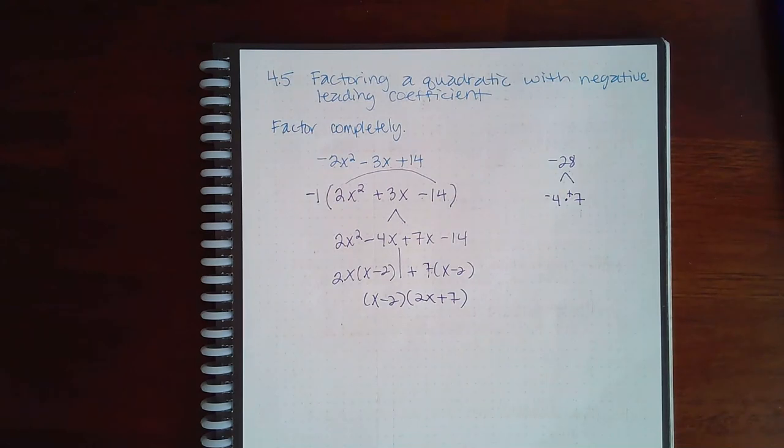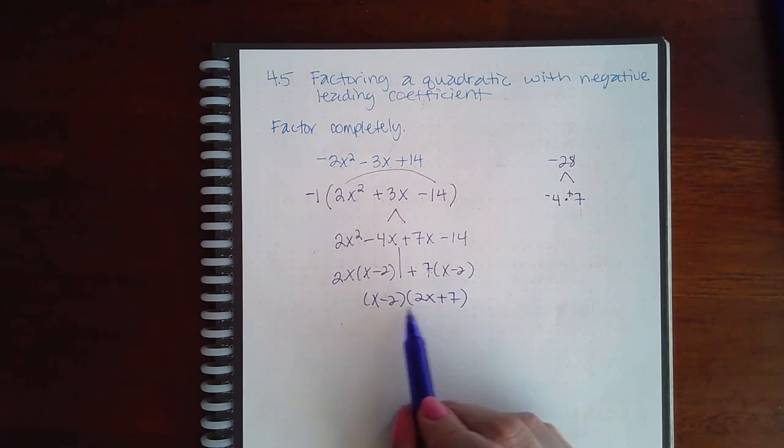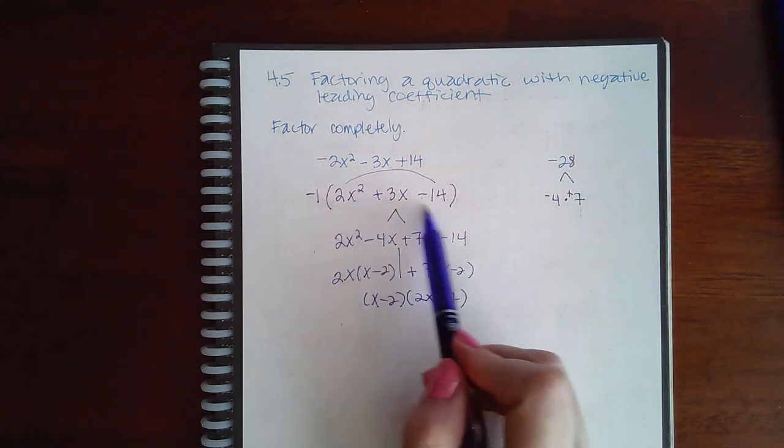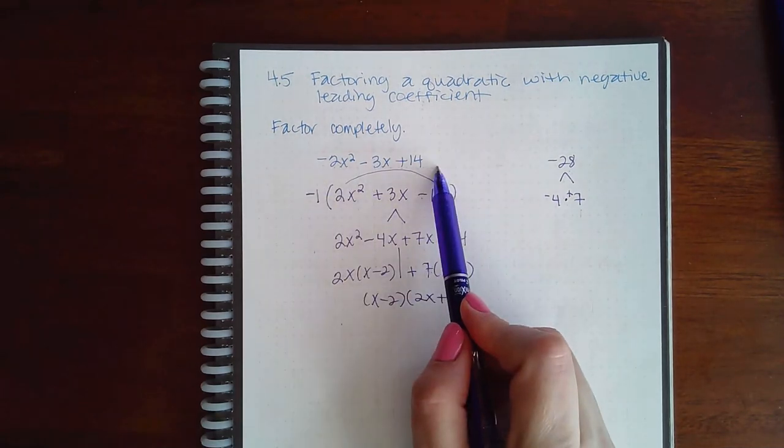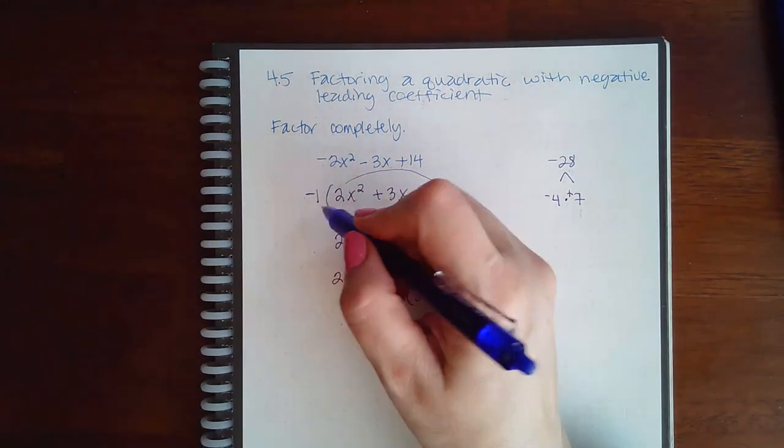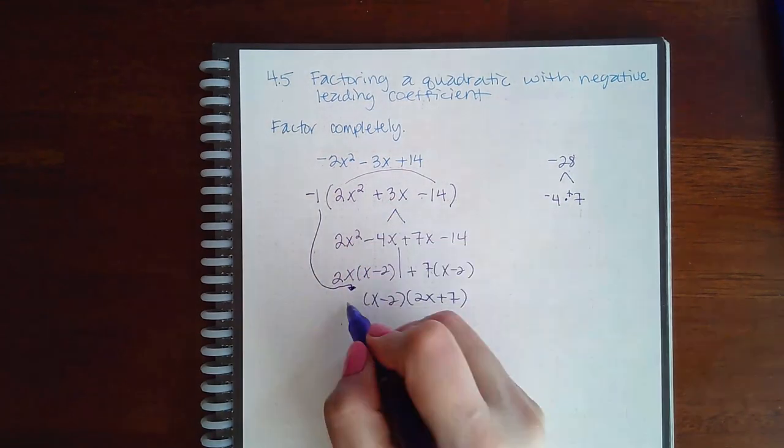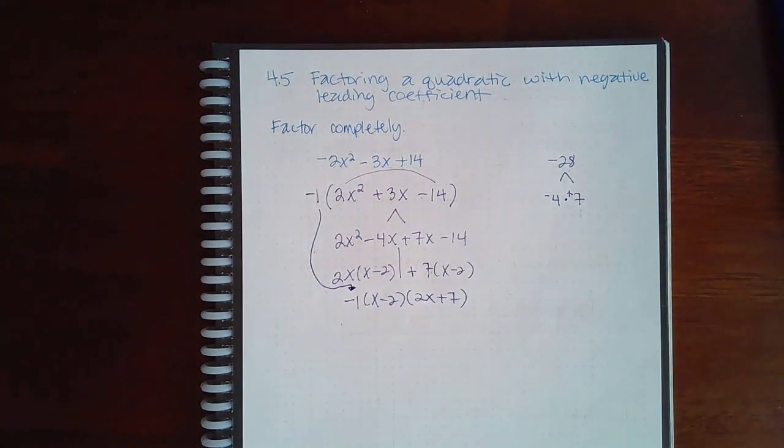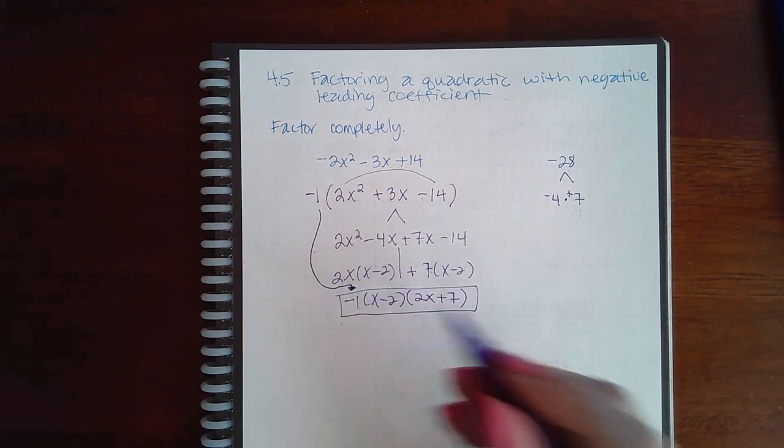That is not the final answer. I cannot box this. And the reason why is because if I multiply this out, I'm only going to get what was inside the parentheses. I'm not going to get the original expression. So you have to remember to put your GCF, even if it's a negative, in the front when you're all done factoring what was in the parentheses. And so this is my final answer.